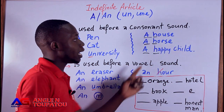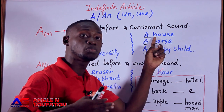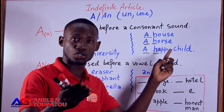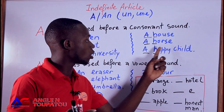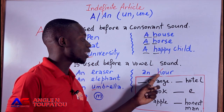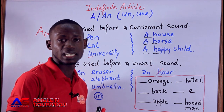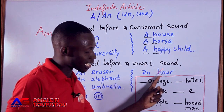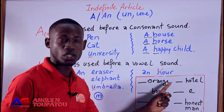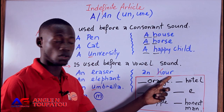But for H — in some cases H is a consonant sound, so you say 'a house', 'a horse', 'a happy child'. But here, this letter H is completely silent — so I don't say 'a hour', I say 'an hour'. This H is completely silent, so I say 'an hour'.